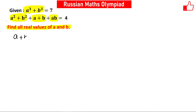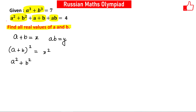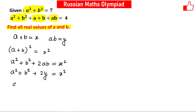We set a+b=x and a·b=y. Then (a+b)²=x², and expanding: a²+b²+2ab=x². Since ab=y, this means a²+b²+2y=x², so a²+b²=x²−2y.